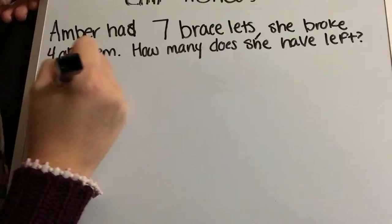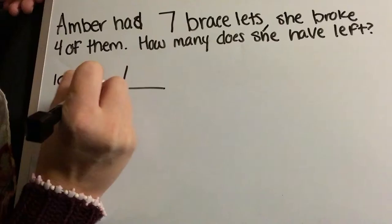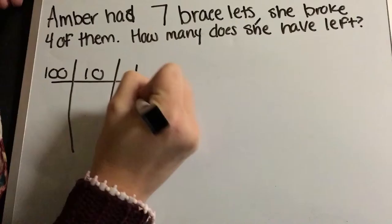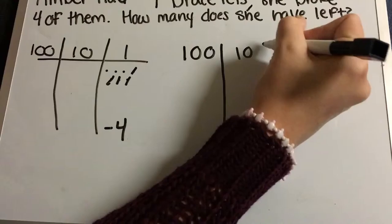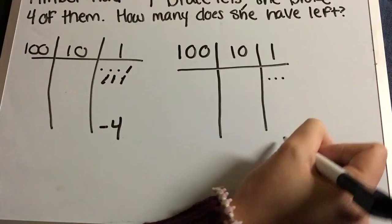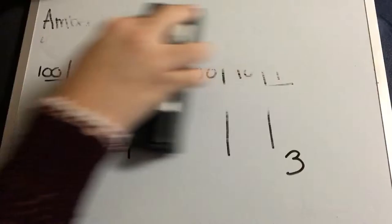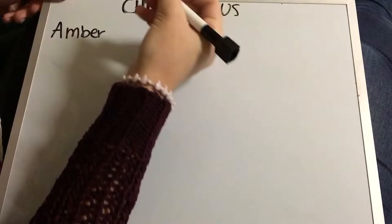The question reads: Amber has seven bracelets, she broke four of them. How many does she have left? So we're going to do the same structure of the chart of the chip abacus. So we're going to take out four to show the ones that are broken. So we're going to do one, two, three, and four. So now we're going to have to make a new column. And that's one, two, three we have left. So the answer is three bracelets left. Okay, so now we're going to make it a little harder.